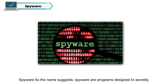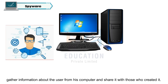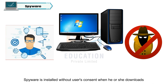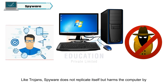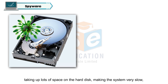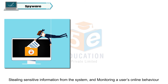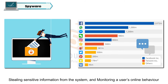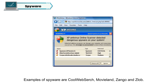Spyware. As the name suggests, spyware are programs designed to secretly gather information about the user from his computer and share it with those who created it. Spyware is installed without the user's consent when he or she downloads a file from the internet or clicks on any link or pop-up window while browsing. Like Trojans, spyware does not replicate itself but harms the computer by taking up lots of space on the hard disk, making the system very slow, stealing sensitive information, and monitoring a user's online behavior to pass data to advertisers and other interested parties. Examples of spyware are CoolWebSearch, Movieland, Zango and Zlob.